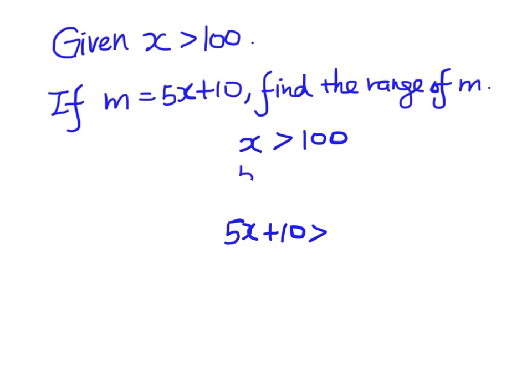So we multiply both sides by 5. We have 5x greater than 500, and then we add both sides by 10.